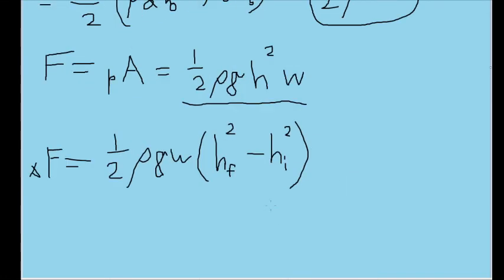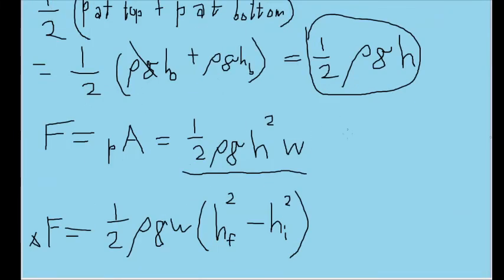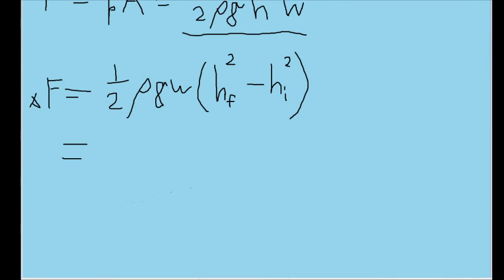And this is the formula we'll be using. Now we just plug in our values. We plug in the density of water, which the density of water in this case is presumed to be 998 kilograms per cubic meter, times G which is 9.8 meters per second squared, times the width, 8 meters.